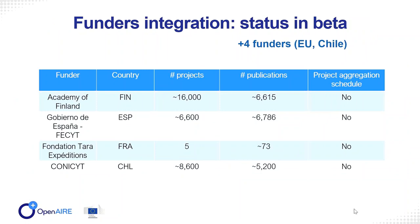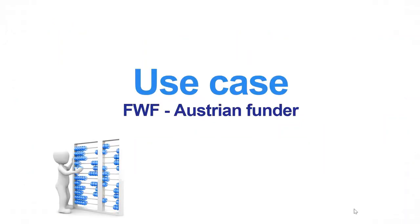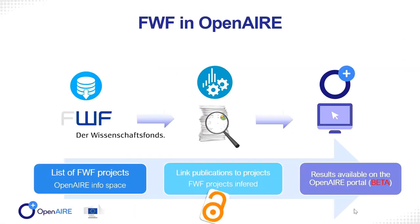Here we can also see funders who are in beta. Now we can proceed to the use case of the Austrian funder FWF. We depict the integration workflow of the FWF: first, they provide us with a list of their projects; we match these projects with publications; and then we display these results on beta.explore.openair.eu.